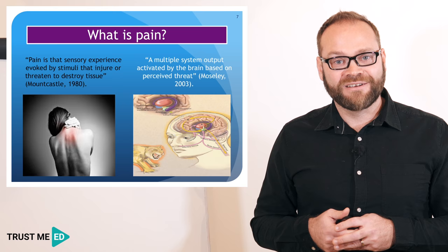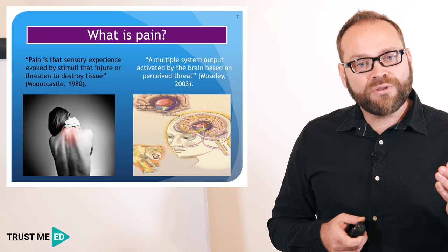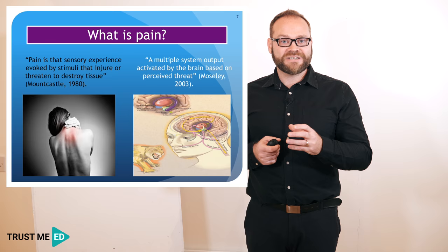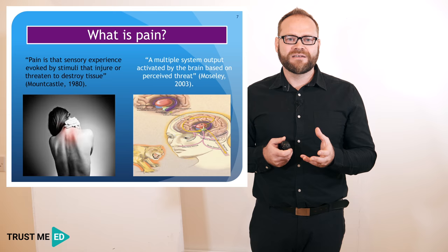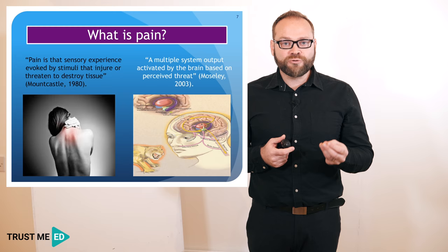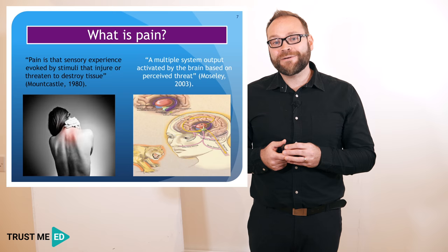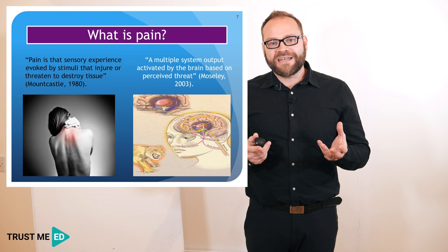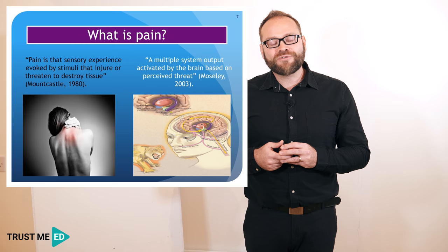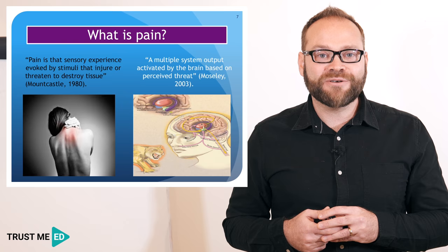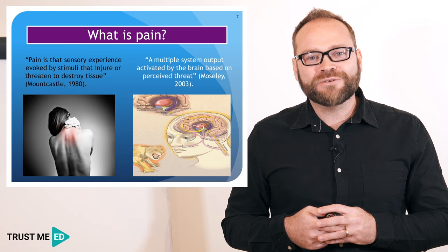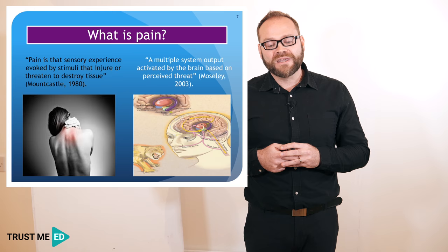The most important thing in Lorimer Moseley's definition is 'perceived threat' — that's why we have the scary-looking saber-toothed tiger on this image. Pain is a perceived threat; it's directly linked to how confident, vulnerable, or fragile you feel. Sadly, as healthcare professionals we can make people feel more fragile and more vulnerable through nocebo information. Nocebo is placebo's evil twin — it's threat information that people attend to and that can be very unhelpful.